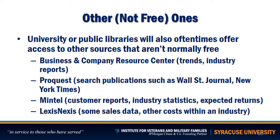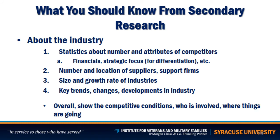Some not-so-free resources available at university and public libraries include the Business and Company Resource Center, which provides trends and industry reports; ProQuest, which gives you search access to publications such as the Wall Street Journal and New York Times; Mintel; and LexisNexis. What should you know from secondary research about the industry? Statistics about number and attributes of your competitors — financials, strategic focus for differentiation, employees, sales. Also, number and locations of suppliers and supporting firms, size and growth rate of the industry, key trends, and changes — overall, who is involved and where things are going.